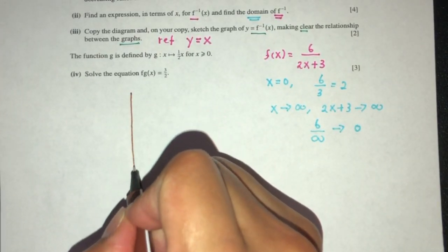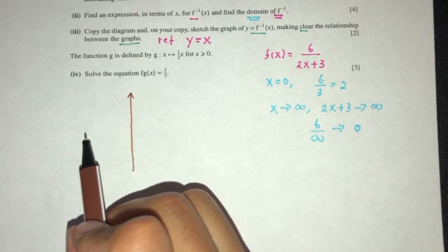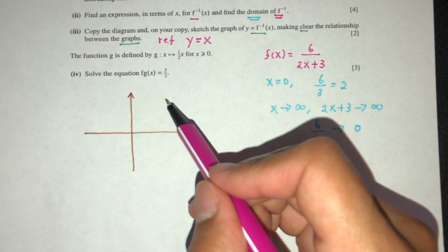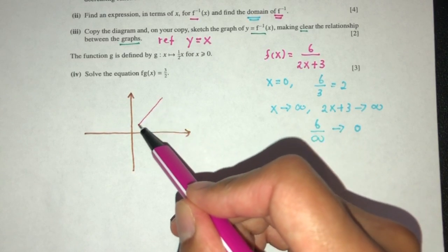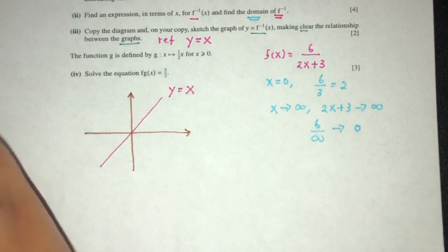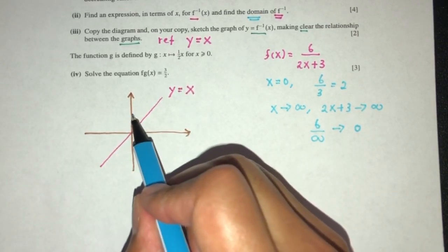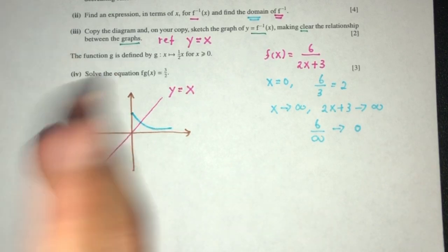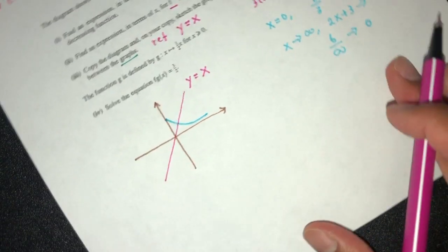We have the y axis, the x axis, and we have to show this line, which is the relationship between them. This is the line y equals x. Now this is given to you here, something like this. So we just have to reflect that.